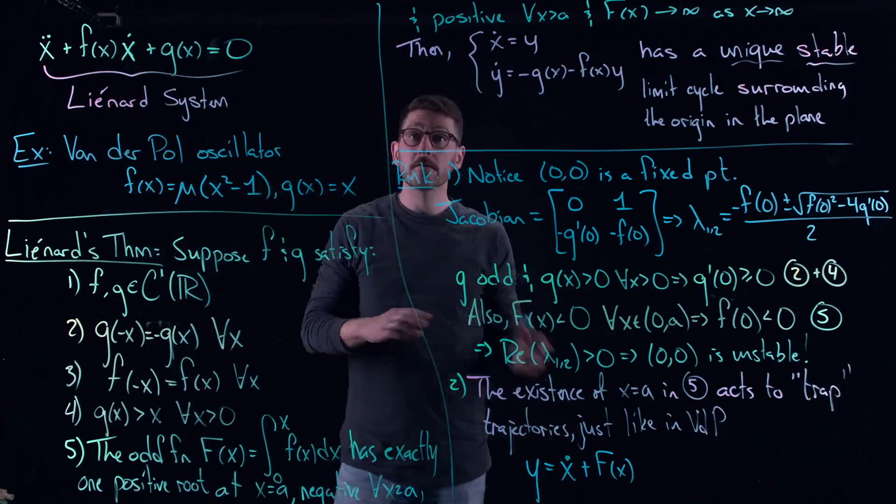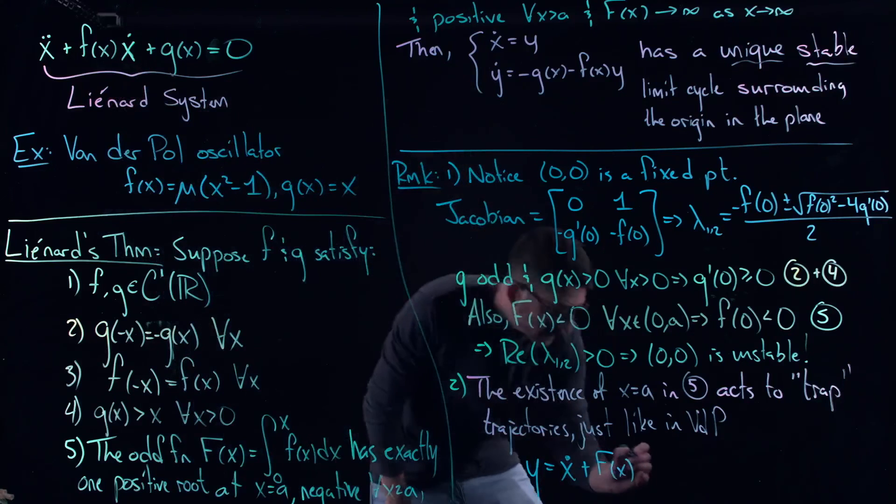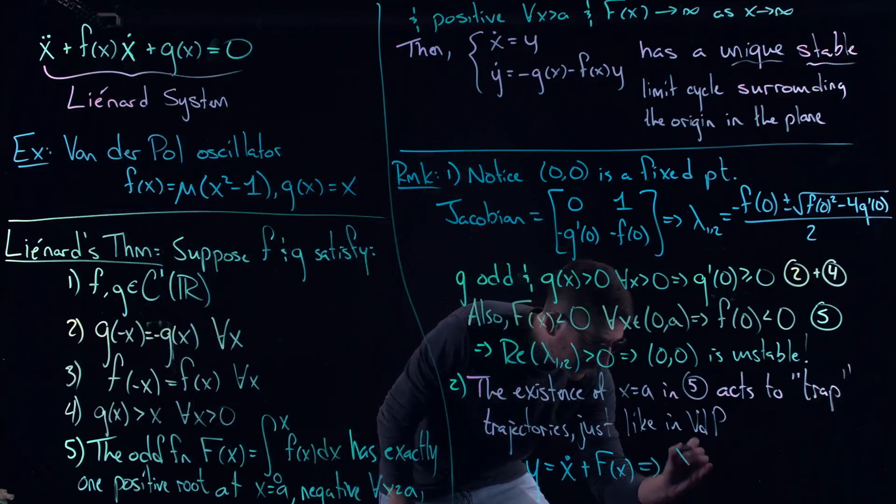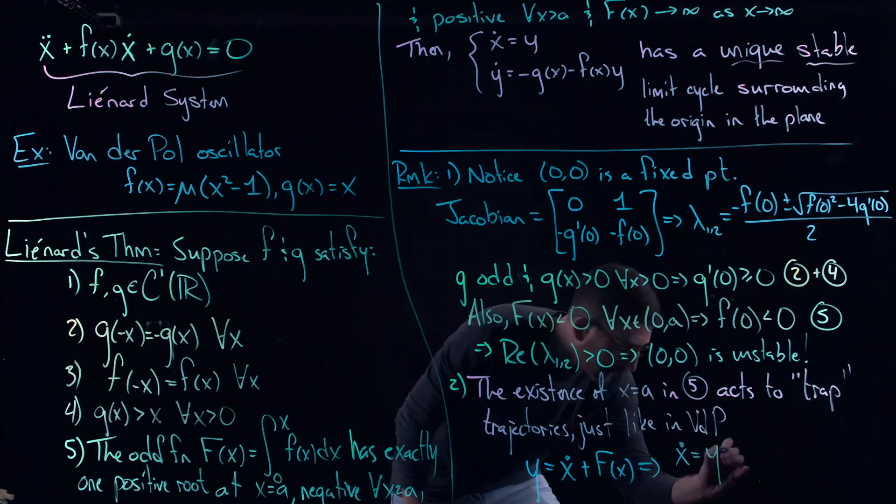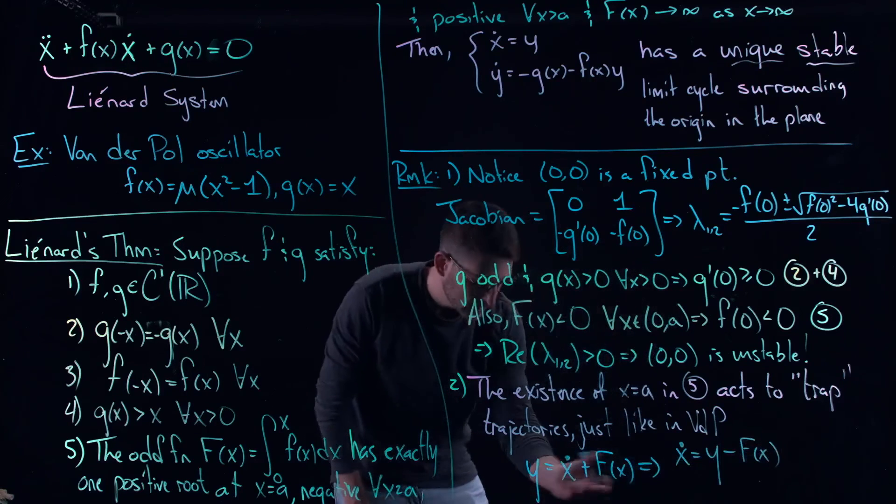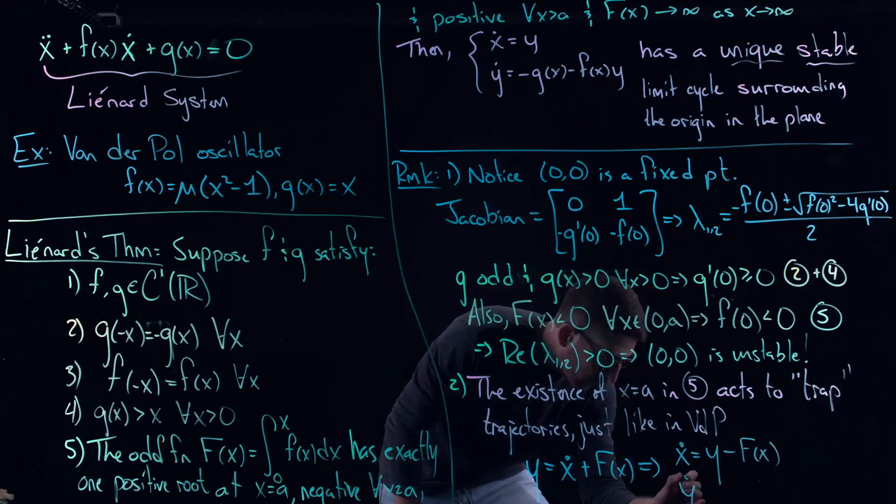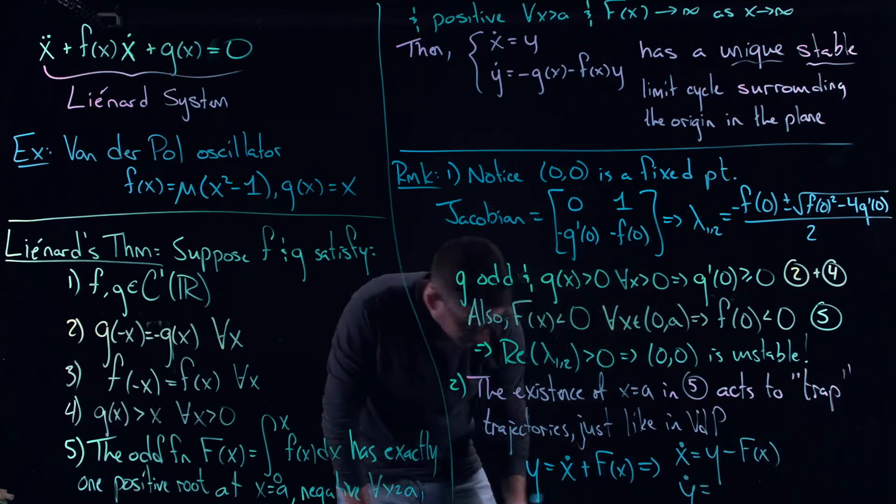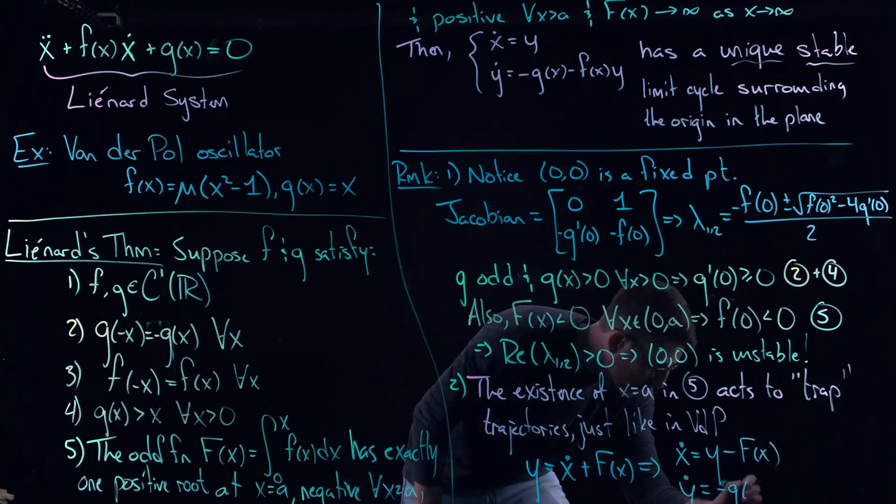So in fact what you would do is you would say y is equal to ẋ plus capital F of x. Okay so in this one that I have right here I have y is just equal to ẋ. So it's going to be a different representation of the phase plane similar to what we did with the Van der Pol oscillator, but again it's all coming from the same equation so it's equivalent, right? Proving that there's a limit cycle here is the same as proving there's a limit cycle here and vice versa.